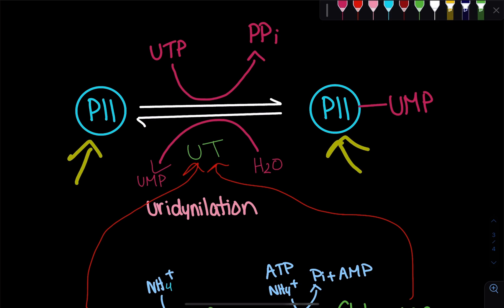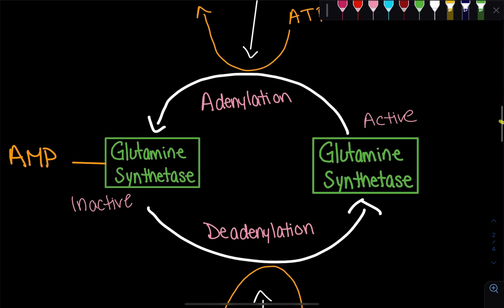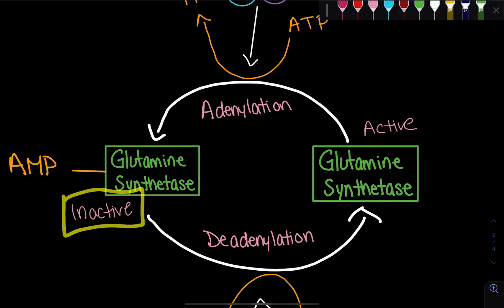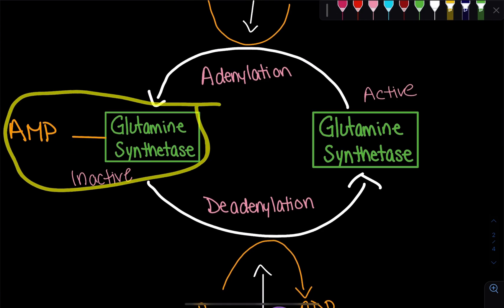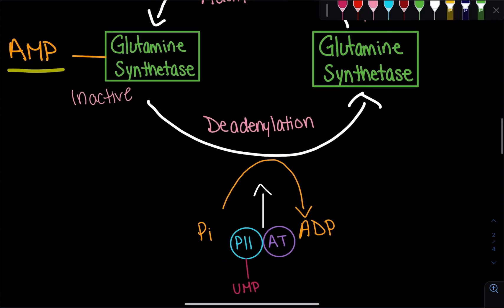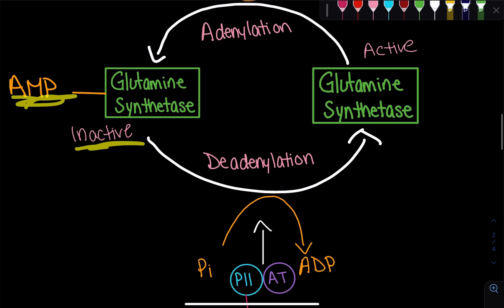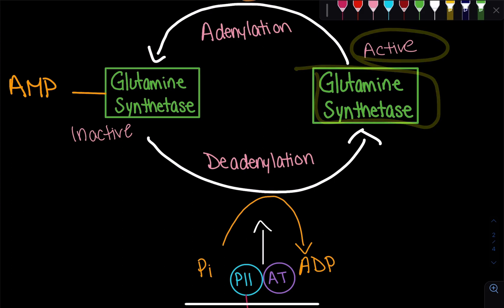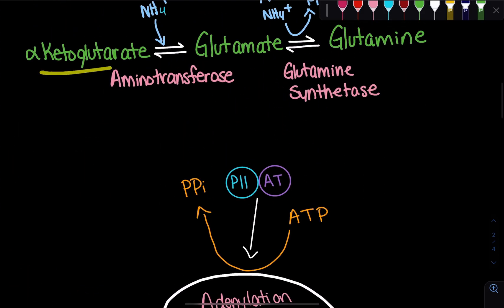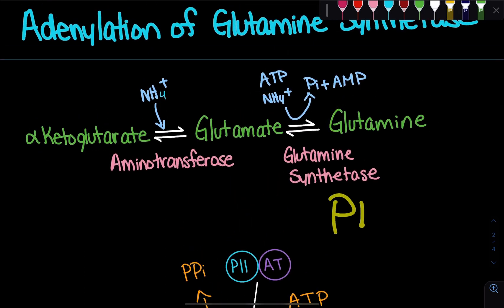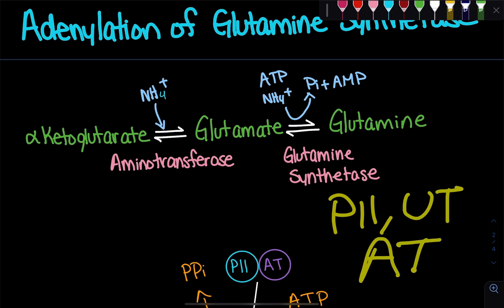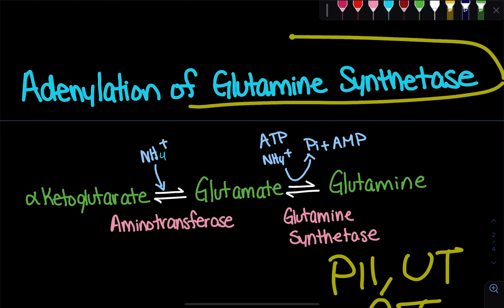In summary: depending on whether P2 is uridylylated or non-uridylylated, we exchange between the inactive and active forms of glutamine synthetase. It's important to note the distinction — P2 carries uracil (UMP), while glutamine synthetase carries adenine (AMP). When AMP is bound, glutamine synthetase is inactive; when there is no AMP, it is active. Everything is controlled through alpha-ketoglutarate, ATP, and glutamine via the P2 protein, the UT enzyme, and the AT enzyme. That's how we regulate glutamine synthetase through adenylation and indirect uridylylation.